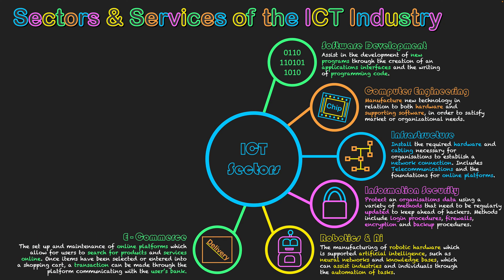Next is e-commerce, which you're probably already using. E-commerce refers to online platforms that allow shoppers to access markets through the internet, search for products and services, place them in a shopping cart, and purchase through online banking — with products then delivered straight to their door, as with eBay and Amazon. This sector involves building online platforms and websites with e-commerce tools to make transactions, communicate with user banks, and coordinate with delivery partners globally.